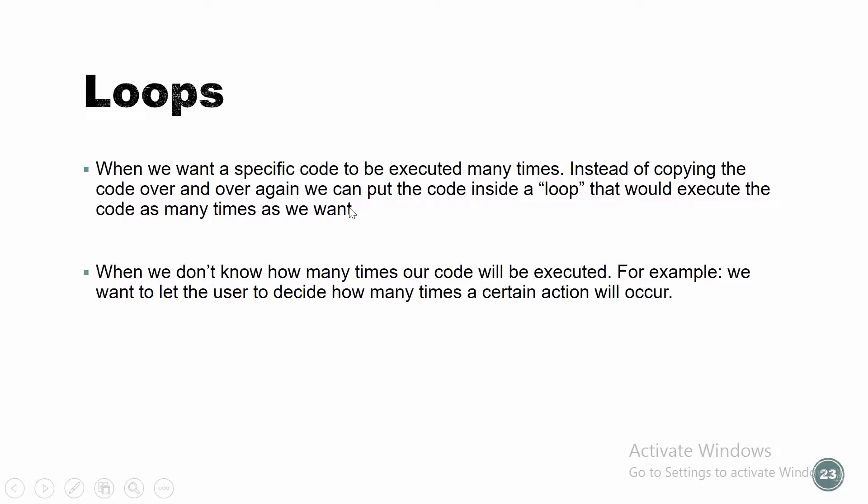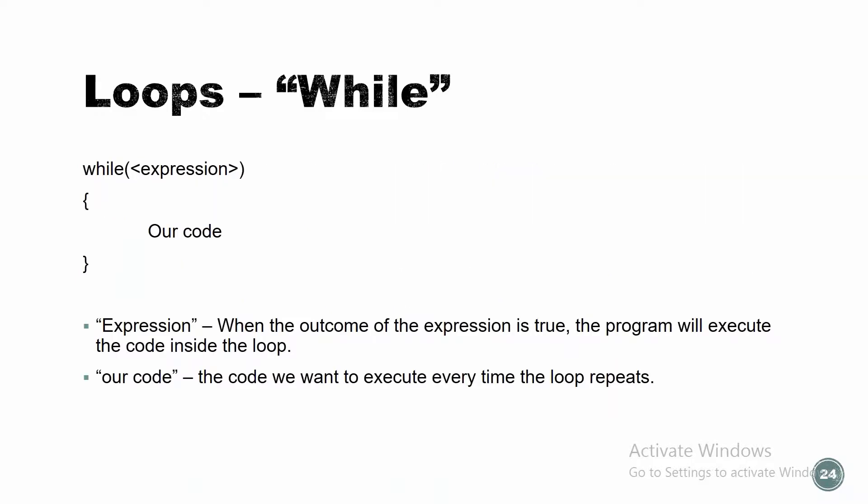What are loops? When we want specific code to be executed many times, instead of copying the code over and over again, we can use a loop. A loop executes the code as many times as we want — for example, when we don't know how many times our code will be executed, or we want to let the user decide how many times a certain action will happen. Today we're going to learn two types of loops: while loop and for loop.